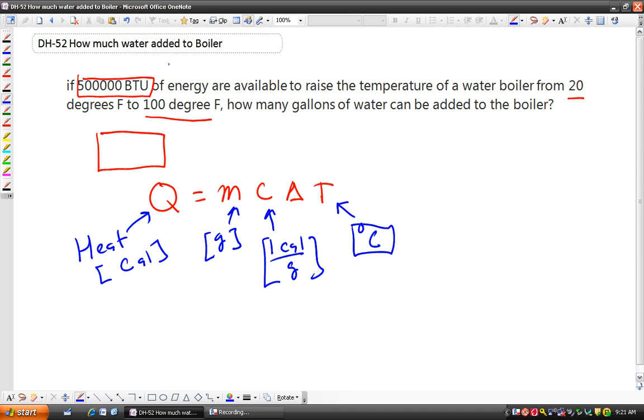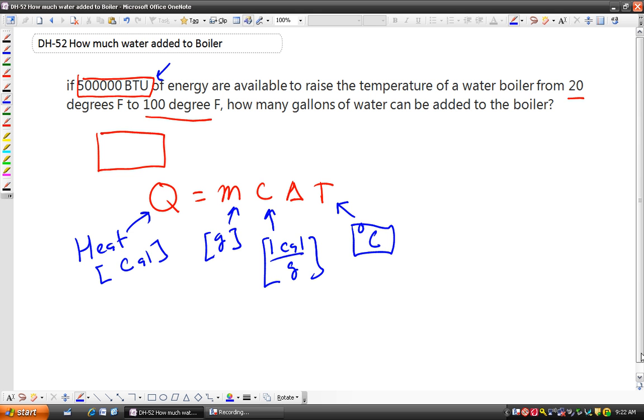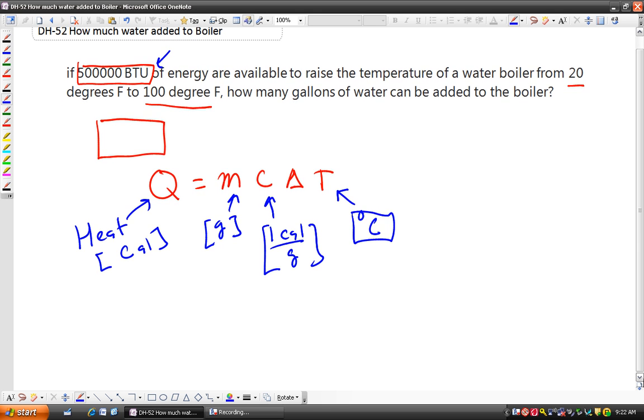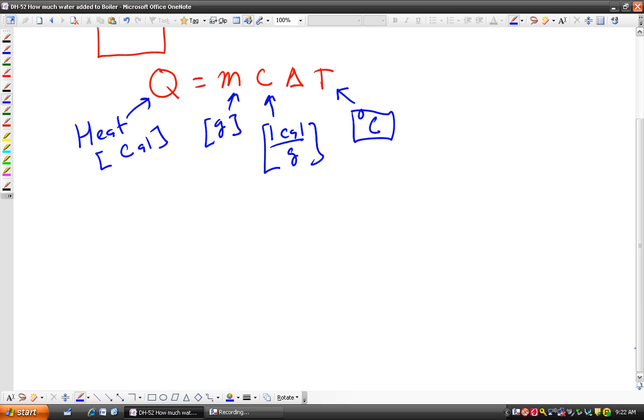One, they didn't give this to us in calories, so we're going to have to convert that. Two, they didn't give us the temperature in Fahrenheit, so we're going to have to convert that too. And I'm going to go through this as if it was an environmental science AP question and you had no calculator. So I want to show you that you don't actually need a calculator to do this, although certainly it would make it easier.